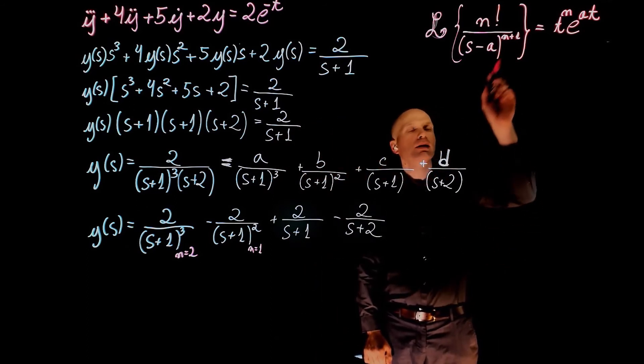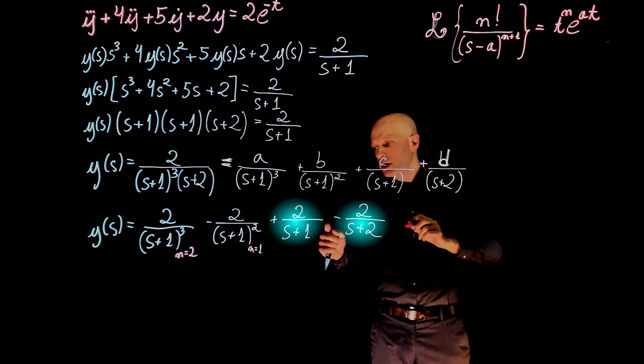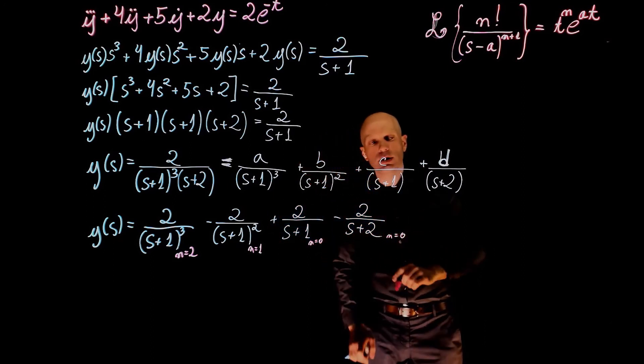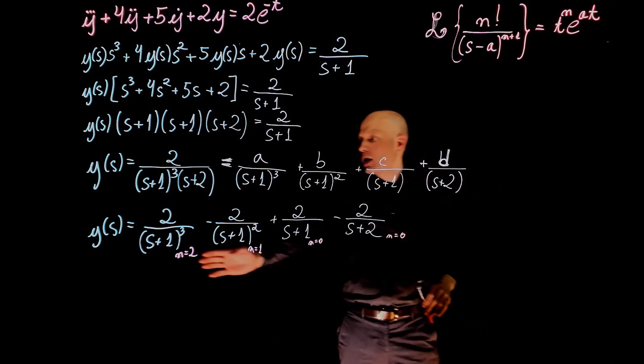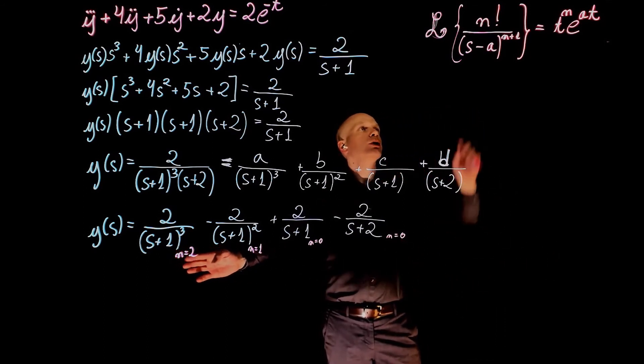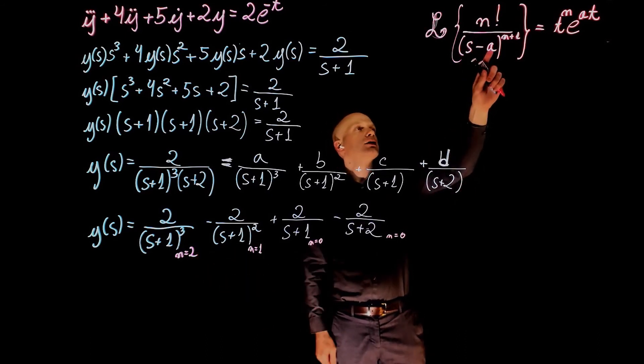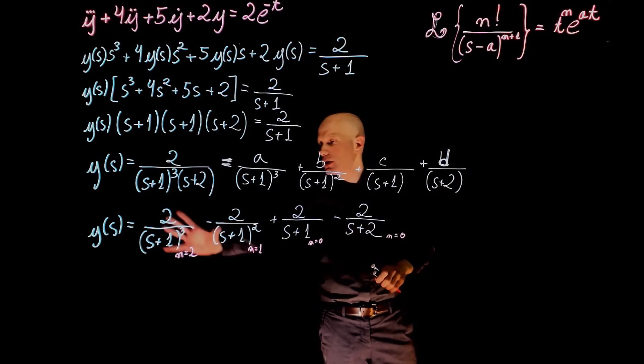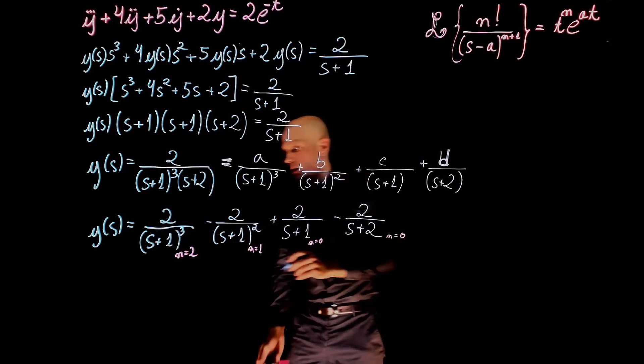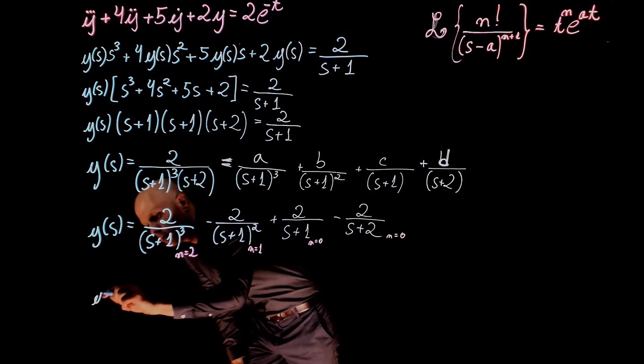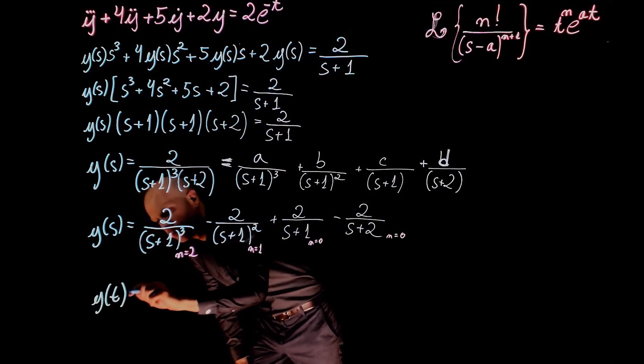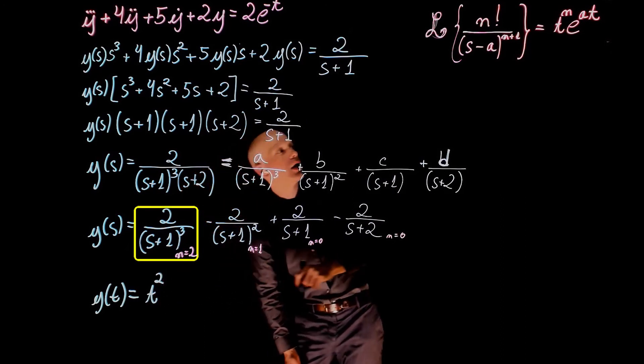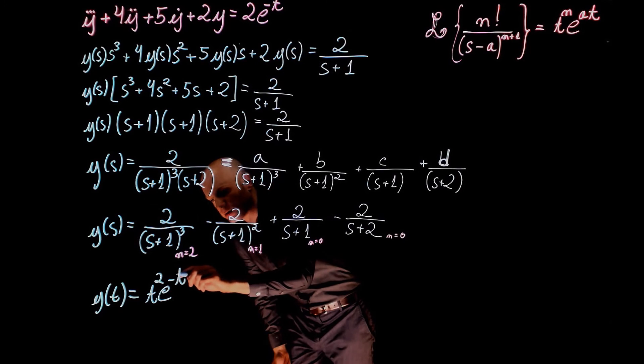For the last element, n plus 1 equals to 1, so n here is 0. And n here is also 0. Back to the first term, we need to find factorial of n. n in this case is 2. 2 factorial is 2, and we have it there already. So this entire fraction simplifies in the time domain, that is y(t), to t squared exponential of negative t.